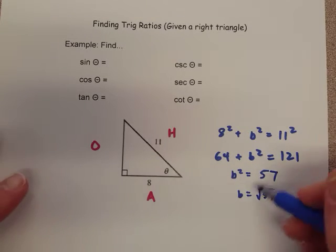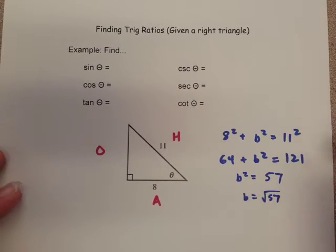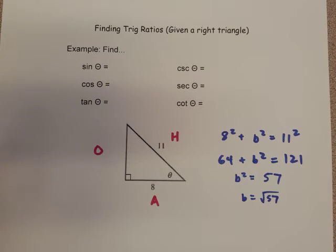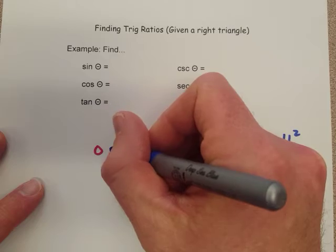Now, usually we talk about doing plus minus when we take the square root of both sides, but we don't have to worry about it here because we are just doing a triangle, and we're only concerned with the positive value anyway, so we're gonna call it the square root of 57.